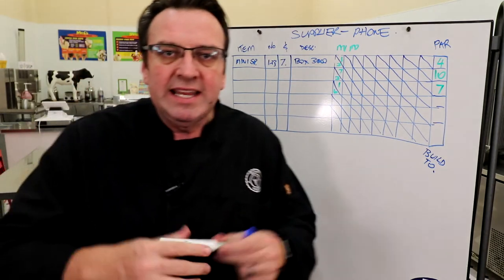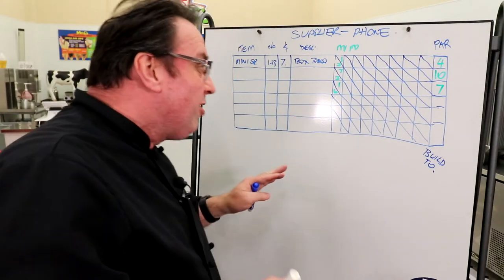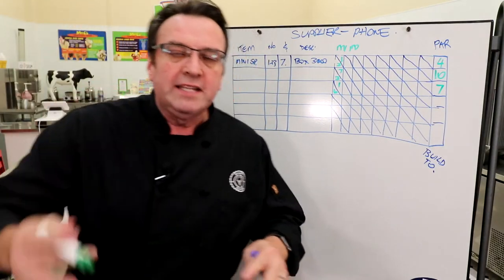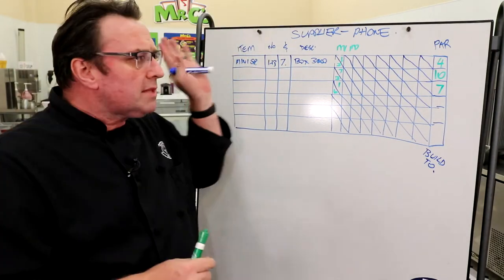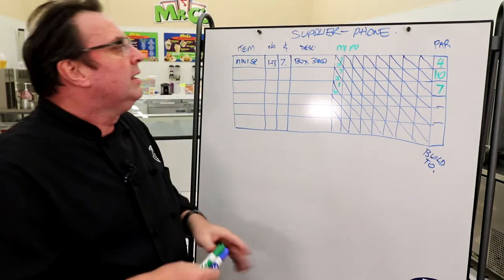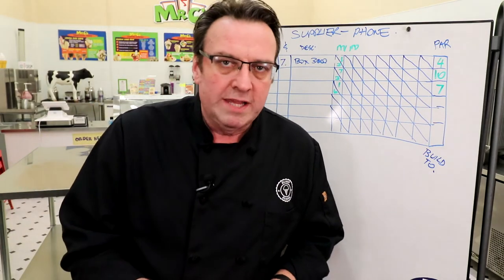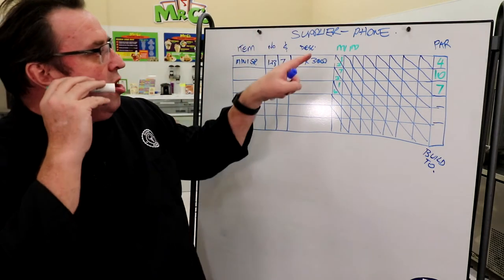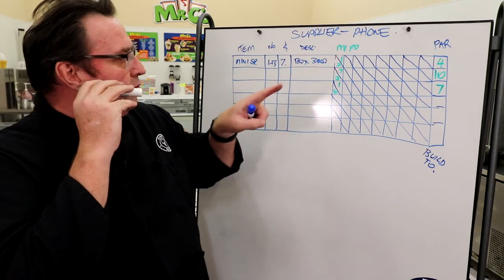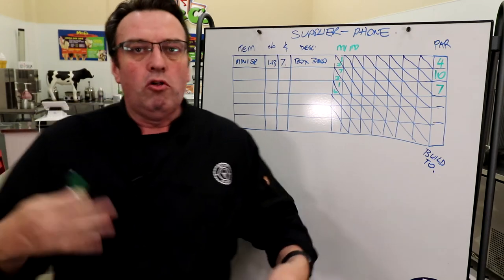And you'll go basically down the list, all of the things that you order from this particular supplier, look at what the recommendation is, your par number, your build to number, look at what you have in inventory, go through that process of calling them up and saying, hey, supplier, I need one of my mini spoons. I need seven plates. I need one and go through that whole process.